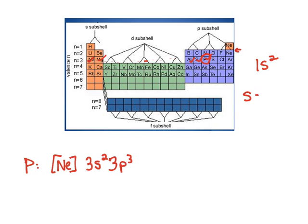So anytime I hit an S, I'm going to draw 1 box, because S can hold 1 orbital. Anytime I hit a P, I'm going to draw 3 boxes. Anytime I hit a D, I'm going to draw 5 boxes. And if I were to hit an F, I would draw 7 boxes.